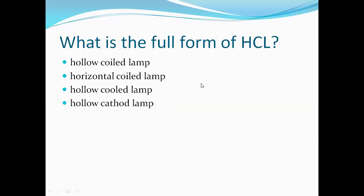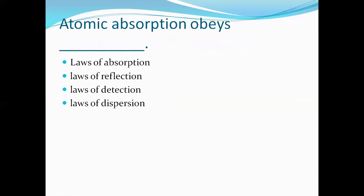The hollow cathode lamp is the radiation source used in atomic absorption spectroscopy. Next question: atomic absorption obeys what? AAS obeys the laws of absorption, as it is based on the absorption of radiation. So the first option — laws of absorption — is the correct answer.